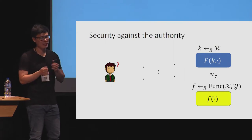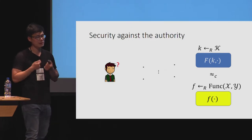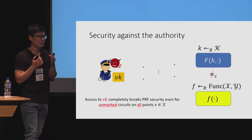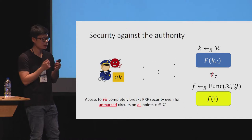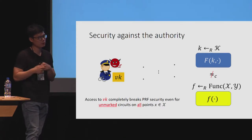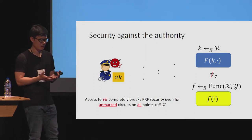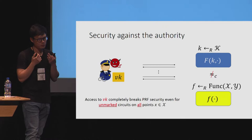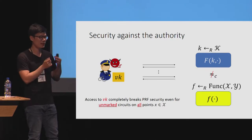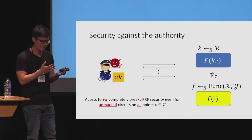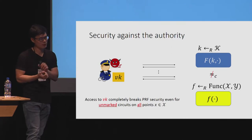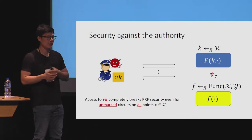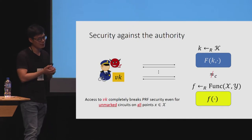The PRF family that QWZ constructs is a secure PRF against any user who does not have access to a verification key. But to the verifying authority who has access to the verification key, the PRF family was completely insecure. The verification key that the authority holds basically acts as a trapdoor or backdoor information to the PRF that clearly compromises its security. It's important to understand this point: for marked circuits, satisfying traditional pseudorandomness against the verifying authority is actually impossible. First, the watermarking authority needs access to the PRF key to watermark the circuit; and second, the verification algorithm itself becomes a distinguisher for the underlying unmarked circuit.